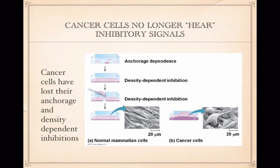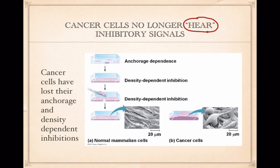Cancer cells no longer hear the inhibitory signals that cause anchorage and/or density-dependent inhibition. The word 'hear' is in quotation marks because cancer cells obviously don't have ears — what they're doing is they're not receiving some type of signal. Scientists believe that this signal is either a signal having to do with anchorage dependence or density-dependent inhibition.